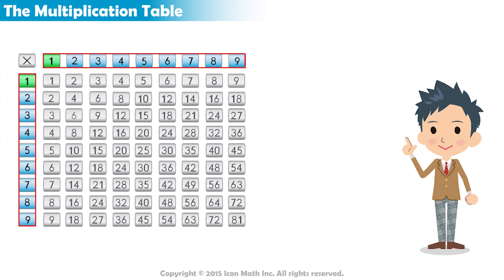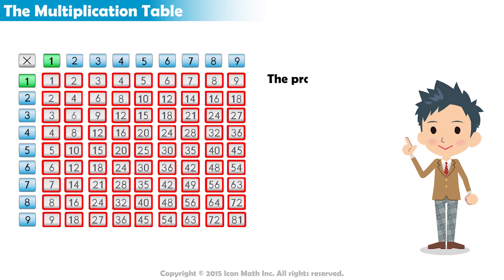The rows and columns both stand for digits from 1 to 9. And each element in the table is the product of its row and column numbers.